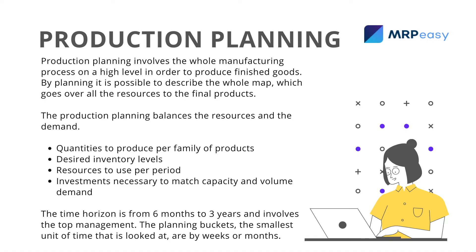Production planning involves the whole manufacturing process at a high level in order to produce finished goods. By planning, it is possible to describe the whole map, which covers all the resources through to the final products. Production planning balances the resources and the demand: quantities to produce per family of products, desired inventory levels, resources to use per period, and investments necessary to match capacity and volume demand. The time horizon is from six months to three years and involves top management. The planning buckets — the smallest unit of time considered — are by weeks or months.